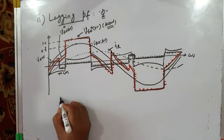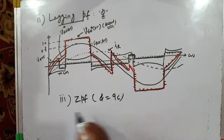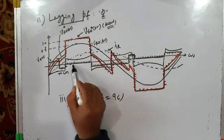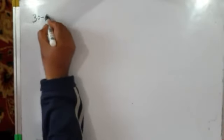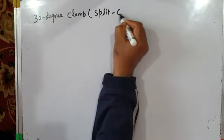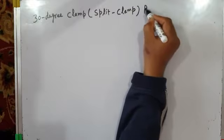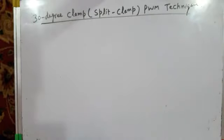That covers the 60-degree clamp PWM technique. You can also try the zero power factor case, where phi equals 90 degrees and current lags behind the voltage by exactly 90 degrees, and draw the waveforms as an exercise. Now let us quickly move on to the 30-degree clamp PWM technique, which is a special case of split clamp PWM technique.